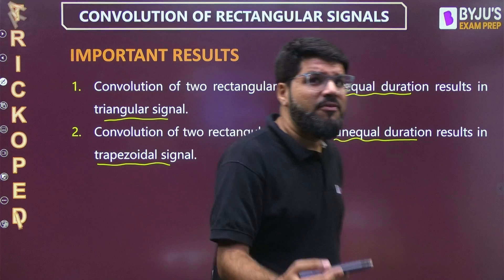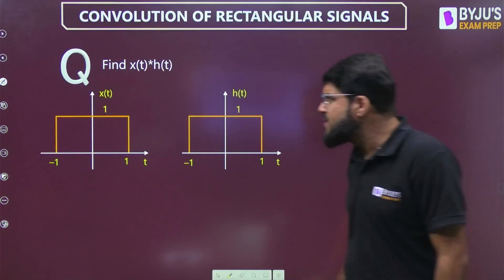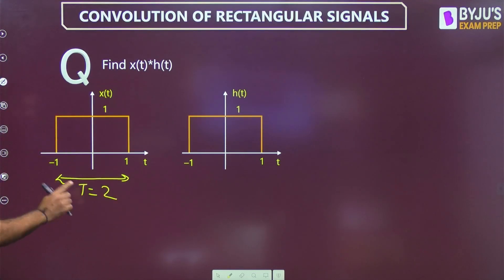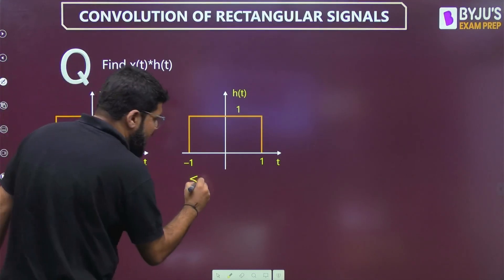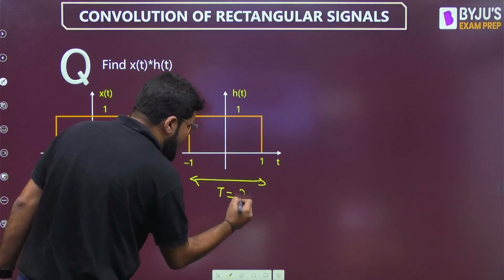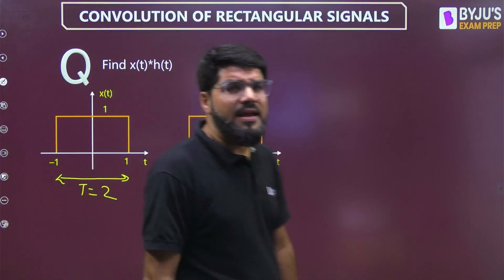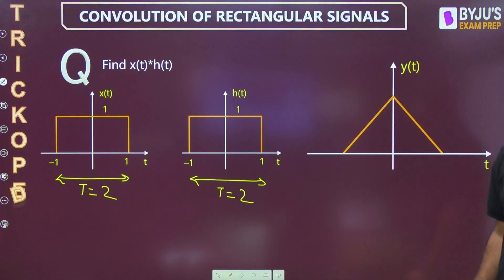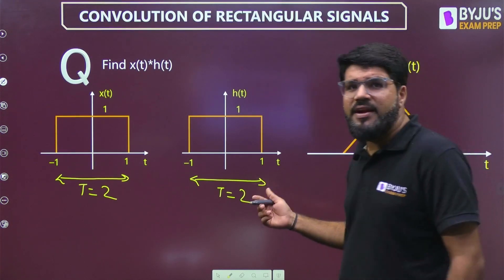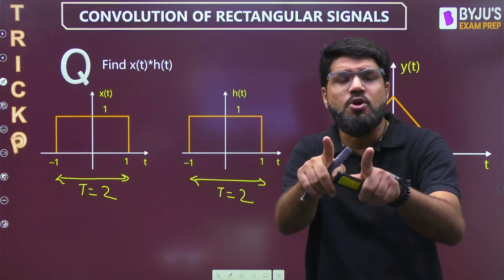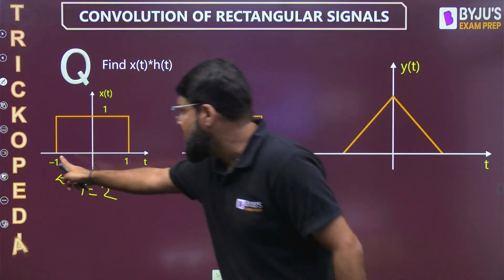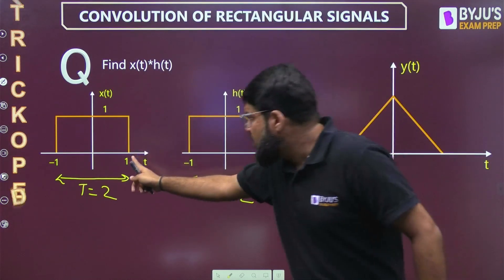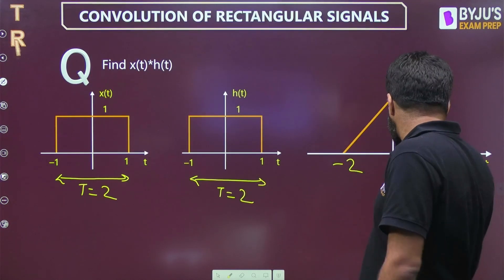Let's look at the first question. These are two rectangles, both of equal duration. The width is 2, from minus 1 to 1, and the second rectangle also spans minus 1 to 1, duration 2. So the result will definitely be a triangle. The starting point is found by adding the starting points: minus 1 plus minus 1 equals minus 2. The ending point: 1 plus 1 equals 2.